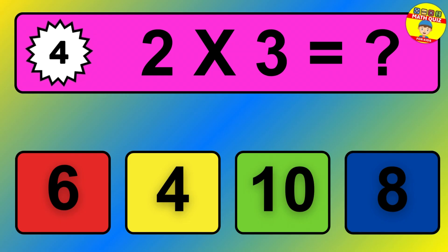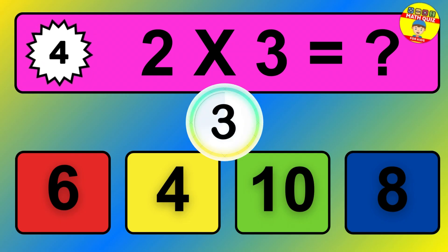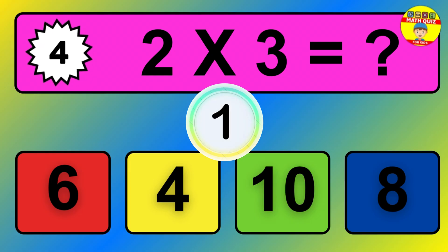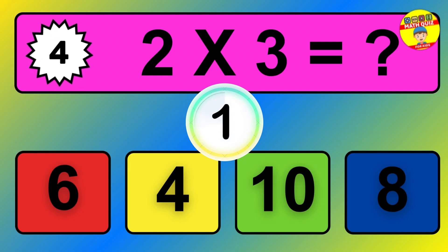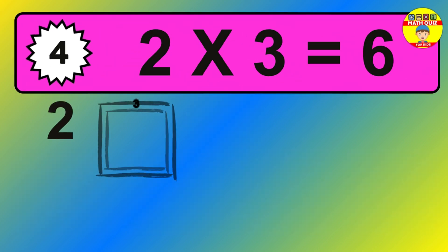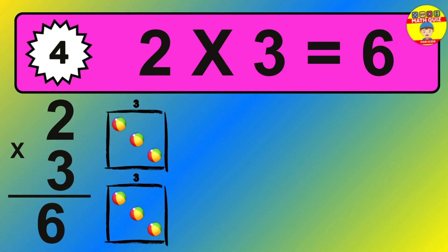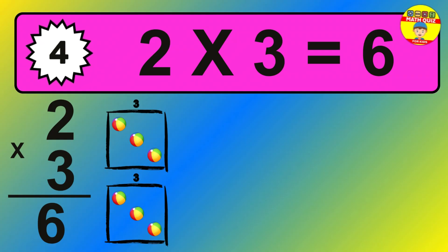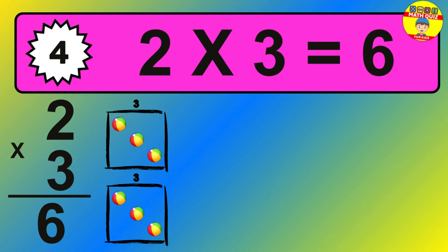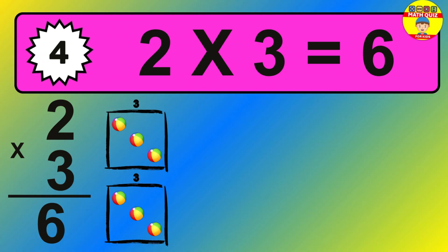Question 4. 2 times 3 equals what? The answer is 2 times 3 is 6. To calculate, we have 2 groups with 3 balls each one. So how many balls do we have? 6 balls.